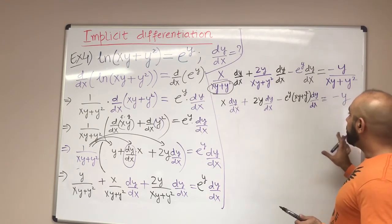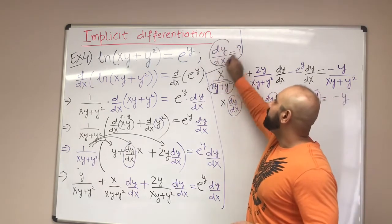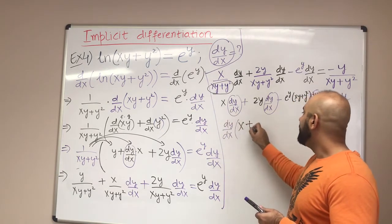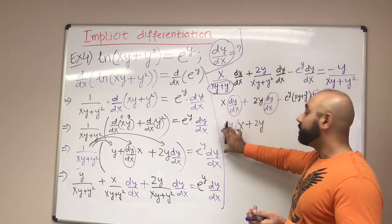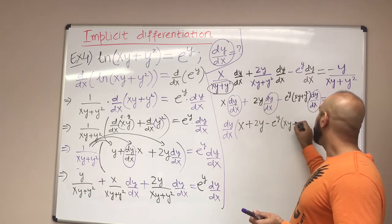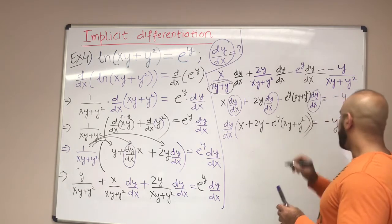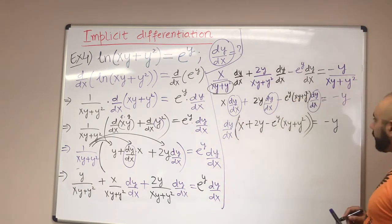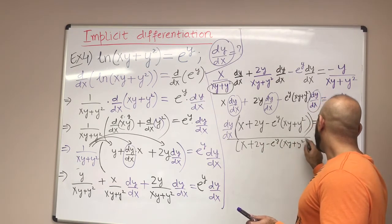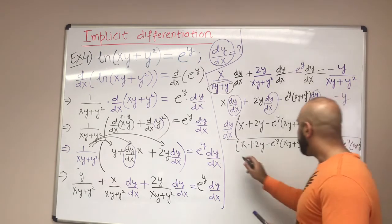Now we factor out dy/dx as a common factor from all three terms on the left. Inside the parentheses we have x + 2y − e^y(xy + y²). We don't need to expand that last part further. So we have dy/dx · (x + 2y − e^y(xy + y²)) = −y. Dividing both sides by (x + 2y − e^y(xy + y²)) isolates dy/dx.